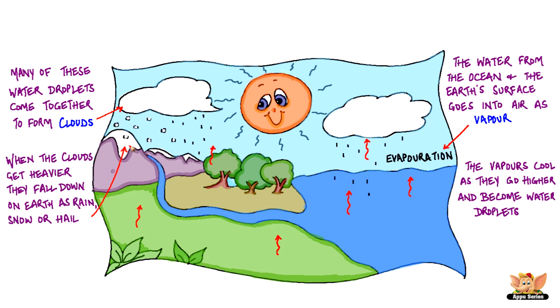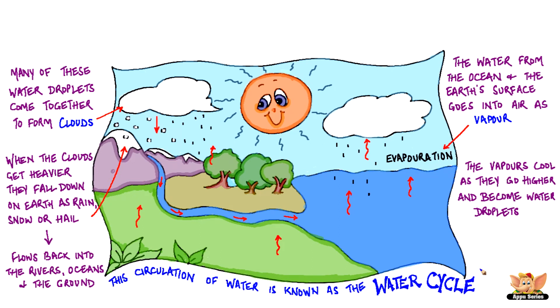This rain, snow or hail flows back into the rivers, oceans and the ground. This circulation of water is known as the water cycle. The water cycle is a continuous process and maintains the supply of water on land.